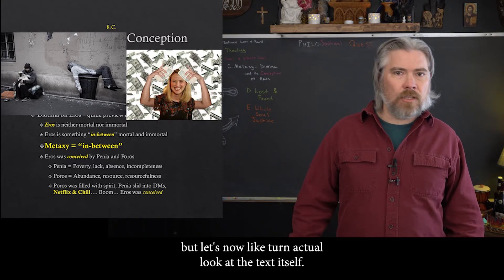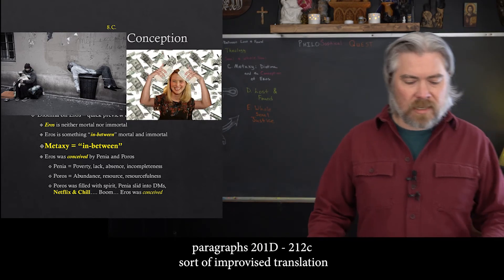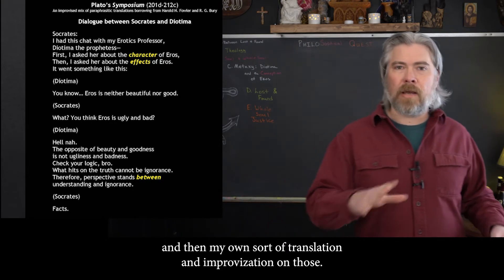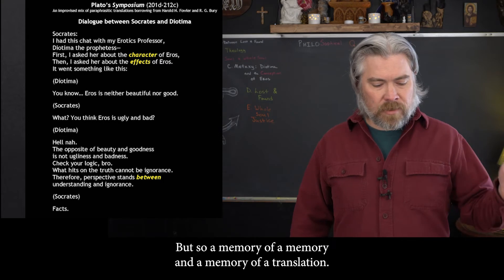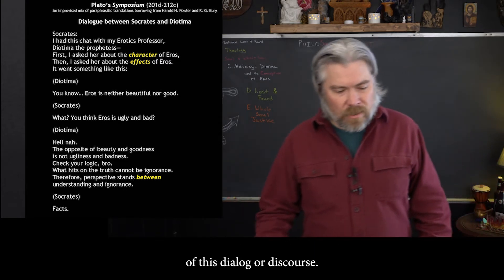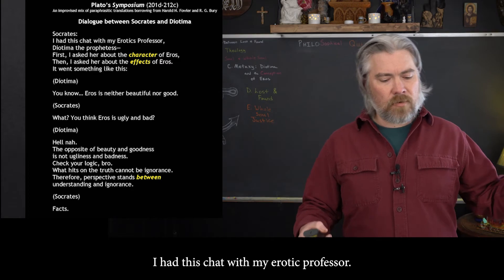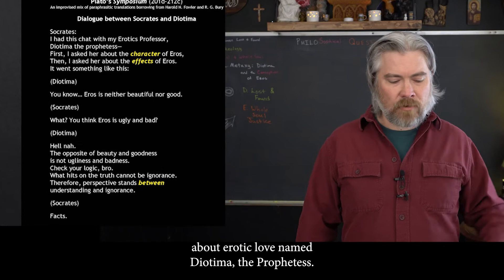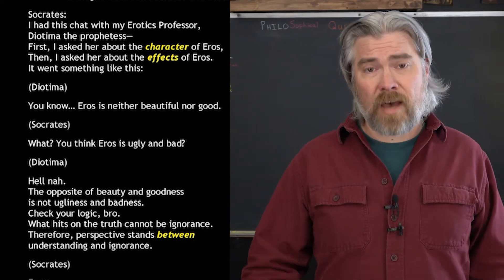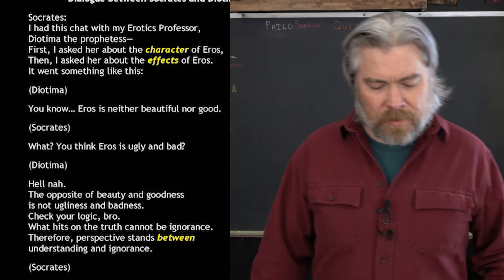Let's now actually look at the text itself. This comes from Plato's Symposium, paragraphs 201d to 212c — a somewhat improvised translation mixing Harold Fowler, R.G. Berry, and my own improvisation on those. So Socrates begins his speech, telling the people at the symposium: I had this chat with my erotics professor, my teacher, the woman named Diotima the prophetess. First I asked her about the character of Eros, then about the effects of Eros. And it went something like this — even saying his memory of it is a little foggy.